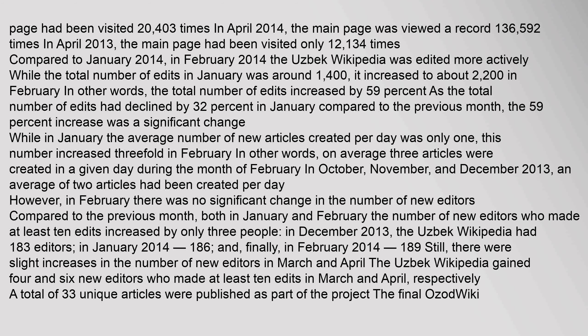The total number of edits increased by 59%, compared to a 32% decline in January versus the previous month, making the 59% increase a significant change. While in January the average number of new articles created per day was only 1, this number increased threefold in February — on average, three articles were created per day. In October, November, and December 2013, an average of two articles had been created per day. However, in February there was no significant change in the number of new editors.